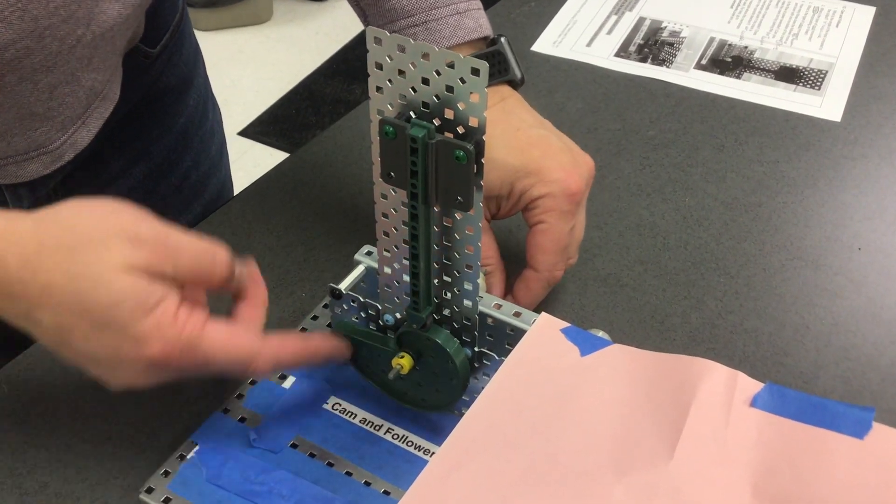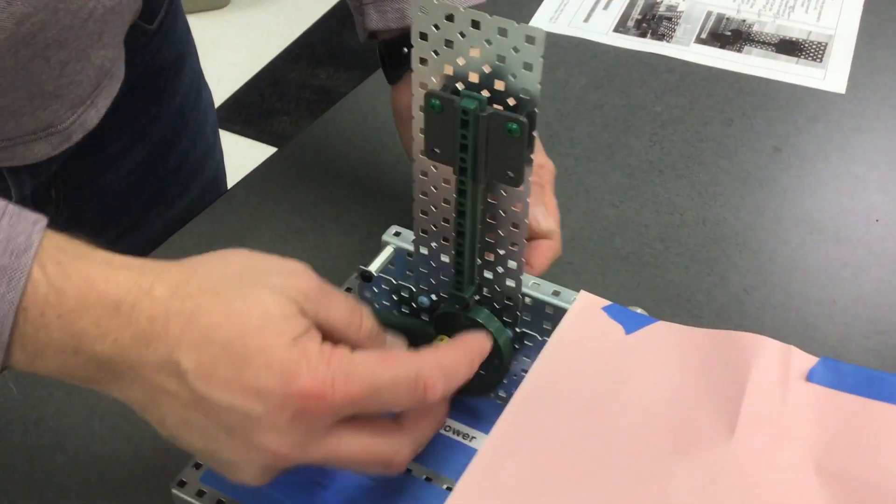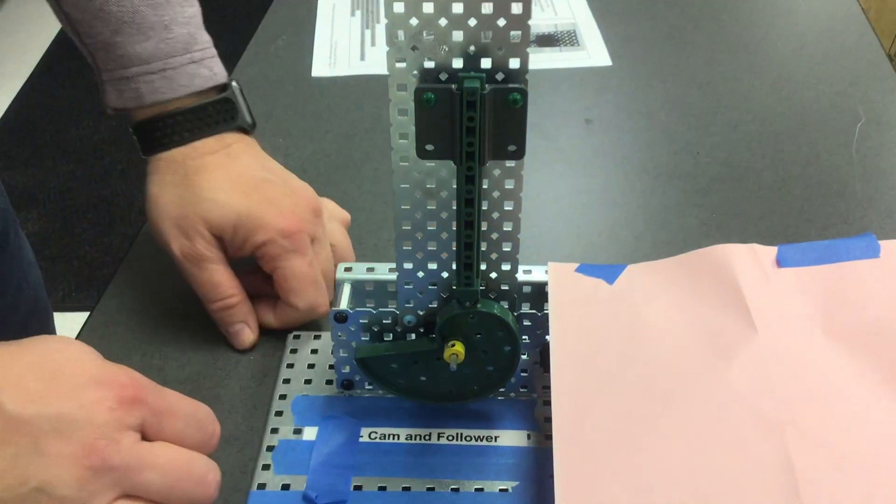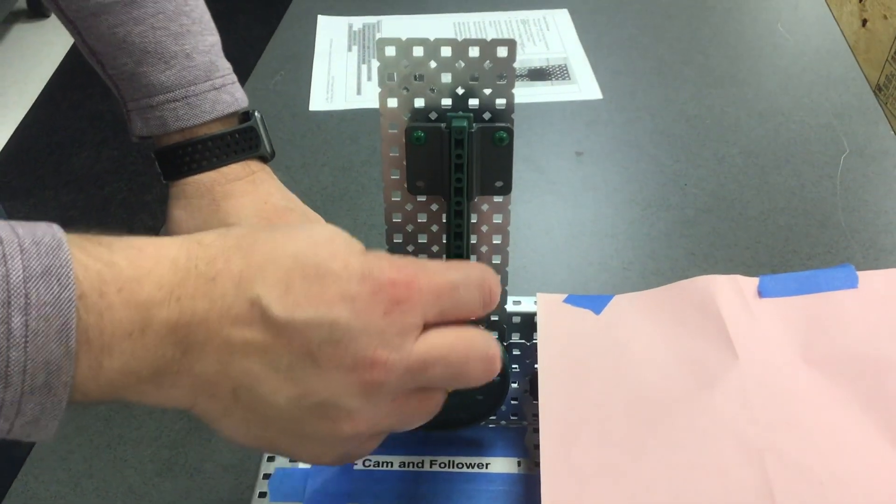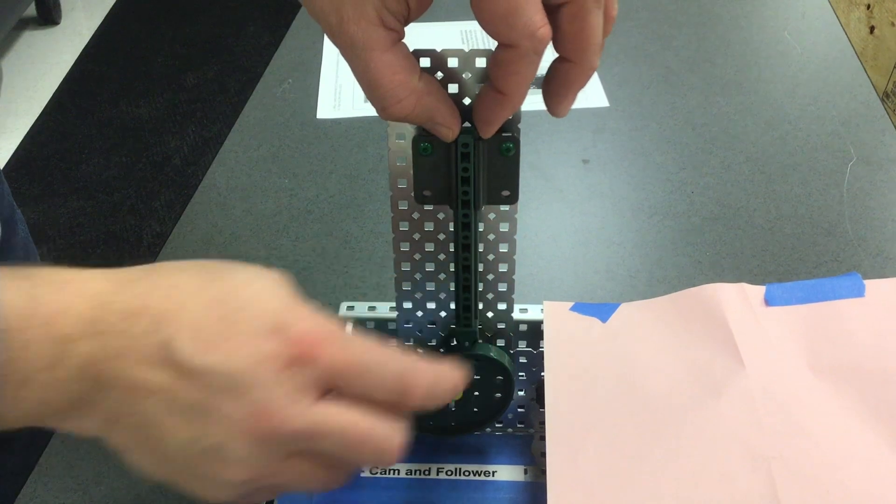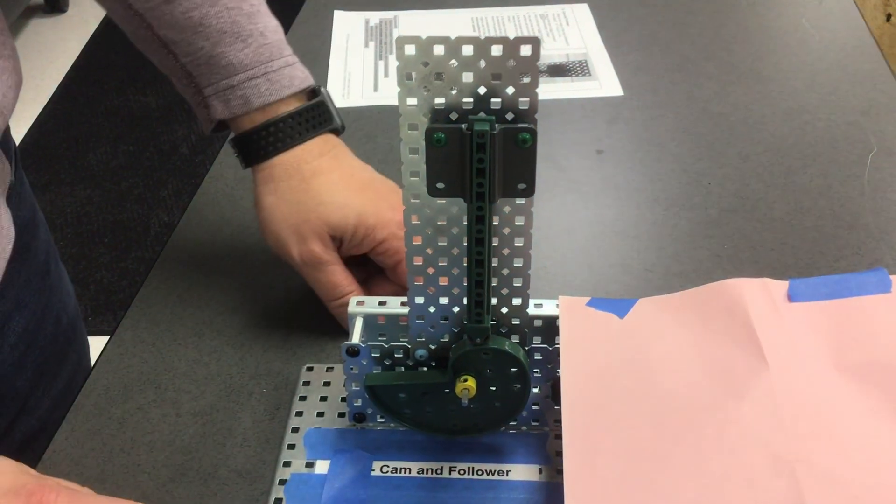In the front here, we have a cam. This cam is a comma-shaped item right here, and then this is the follower. It slides up and down, and this follower will follow the shape of the cam.